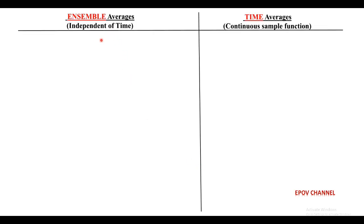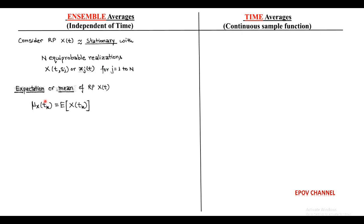First we discuss ensemble averages. We consider a random process x(t) which is stationary with n equiprobable realizations, in the form of an indexed ensemble denoted by X(t, s_j), or simply x_j(t) for j = 1 to n. To find the mean or expectation of random process x(t), we fix a time t_k, which is called a random variable and hence independent of time.